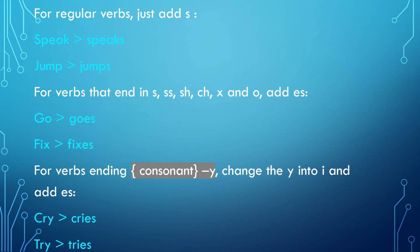There are certain things to keep in mind when learning about the simple present tense. For regular verbs, we just add -s along with the base form of the verb. For verbs that end in -s, -es, -sh, -ch, -x, and -o, we add -es instead of -s. For example, 'go' and 'fix' take -es. For verbs ending in a consonant plus y, we change the y to i and then add -es. For example, the word 'cry' ends in y preceded by a consonant, so we change the y to i and add -es to make it simple present tense.